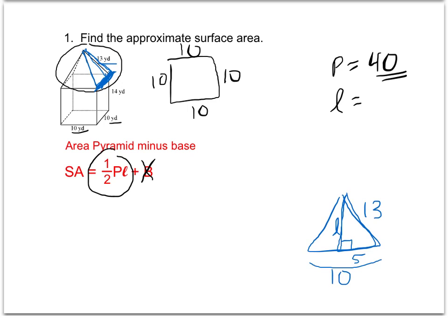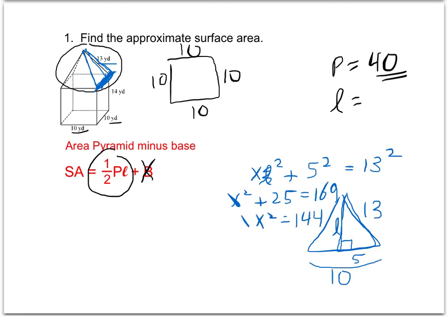Now that I have two sides of a right triangle, I can use the Pythagorean theorem: side squared plus side squared equals hypotenuse squared. Substituting in, x squared plus 25 equals 169, so x squared equals 144. Since 144 is a perfect square, taking the square root gives x equals 12. So 12 will be our slant height for the pyramid.